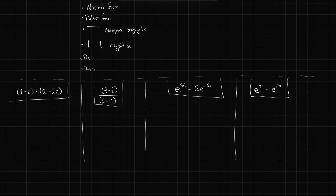The first thing is to compute in normal form. In the first case, all I have to do is FOIL. So I take 1 times 2 to get 2, then 1 times −2i gives −2i, then −i times 2 gives −2i, and −i times −2i gives +2i². Since i² = −1, that 2i² term becomes −2, so the real parts cancel to 0. The imaginary terms combine to −4i. So the normal form is 0 − 4i.